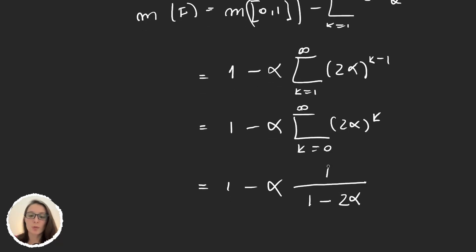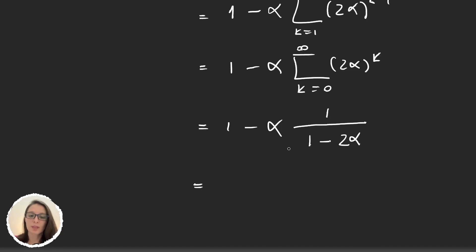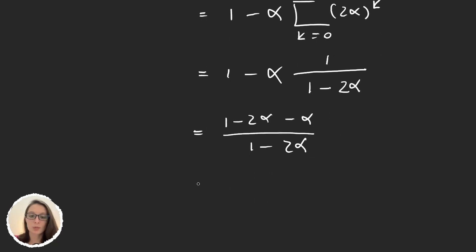So we can rewrite this with common factor 1 minus 2α and we would get 1 minus 2α minus α.